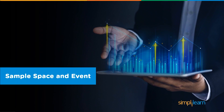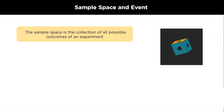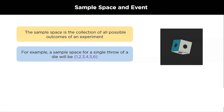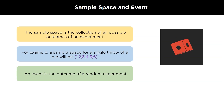Sample space and events. The sample space associated with a random experiment is the set of all the possible outcomes. Suppose you roll a die — the sample space for a single throw of a die will be 1, 2, 3, 4, 5, and 6. An event is a subset of the sample space, or you can say it is an outcome of a random experiment.